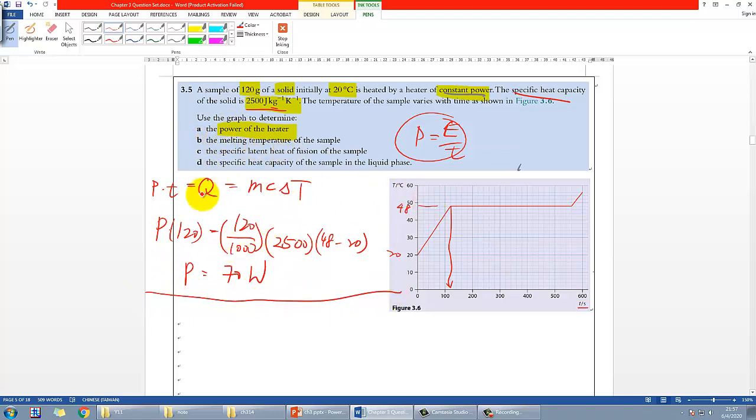For part b, the melting temperature simply be whatever you can read here, so 48. Let's not forget the unit - degrees Celsius.